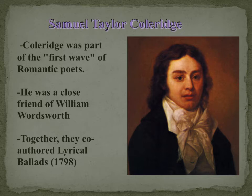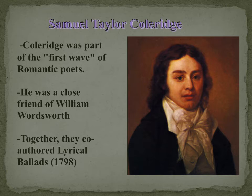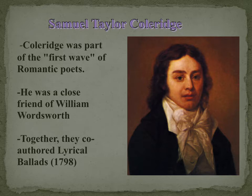Samuel Taylor Coleridge was born in Devonshire in 1772, the youngest of the many children of a self-made clergyman and schoolmaster. He was a fantastic dreamer, despised by other boys and unable to mingle with them. After the death of his father, he was sent to Christ's Hospital, the Blue Coat Charity School in London, where he spent nine lonely years. Very strict discipline was no doubt of much value in giving firmness and definite direction to his irregular nature, and the range of his studies both in literature and other fields was very wide.